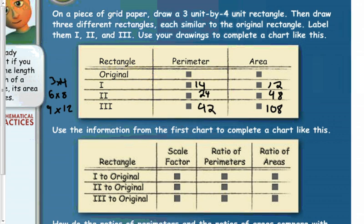Looking at the rectangles, if our original is the base figure, the scale factor from the original to the second one is 2 because you're multiplying everything by 2. The ratio of the perimeters is also 2 — two times bigger. But the ratio of the area is four times bigger, so it's squaring what the scale factor was.